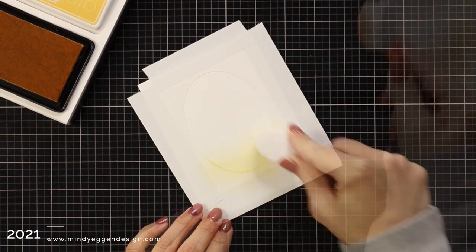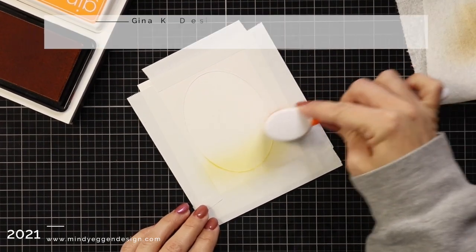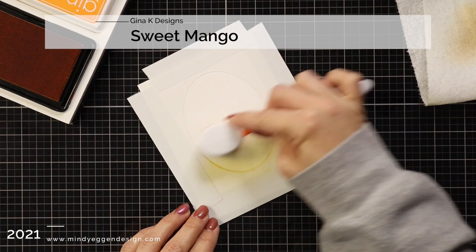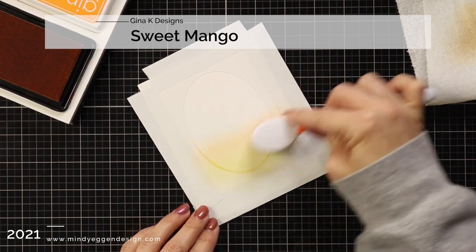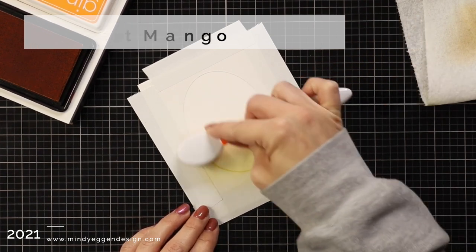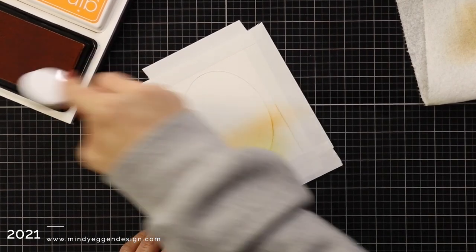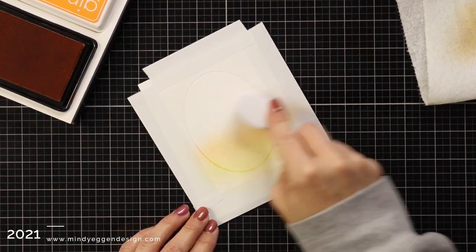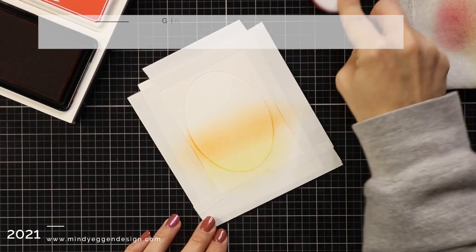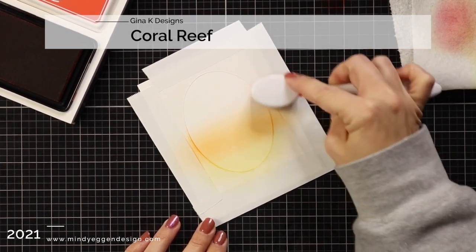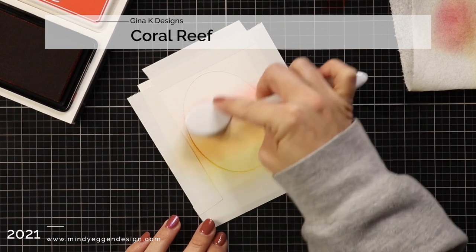Next I'm going to start by ink blending sweet corn ink towards the very bottom. Then I'm bringing in sweet mango just going very light-handed. I definitely like to start out lighter with the shades than darker because I can always add more ink, which I do end up doing. Then I'm going to bring in coral reef and all of these colors are from Gina K Designs line.